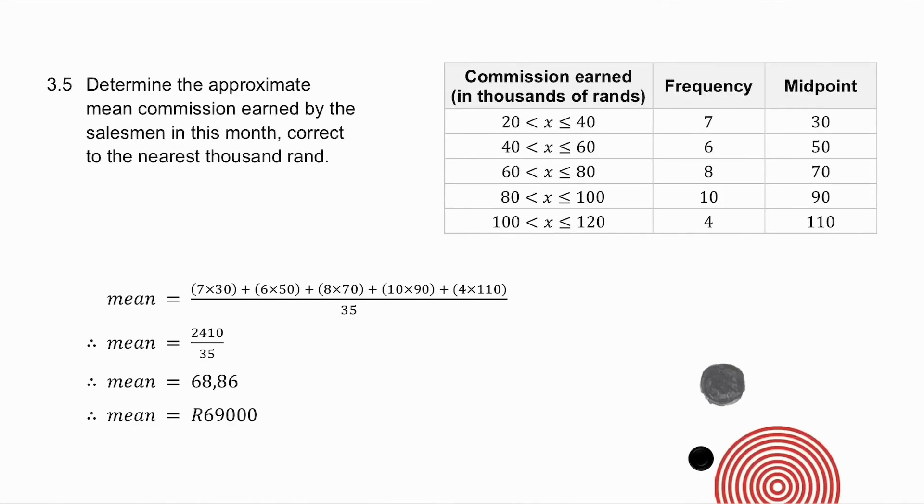3.5 asks you to determine the approximate mean commission. Remember to get the mean from group data, you take the midpoint of each interval. So the midpoint of 20 to 40 is 30. The midpoint is 50, and so on. I then take the frequency times the midpoint. And I get all of those. There are 35 in total, so I divide by 35. And again, this question was in thousands of rands, and they wanted it to the nearest thousand rand. So I multiply this by a thousand, and I round it off to the nearest thousand.